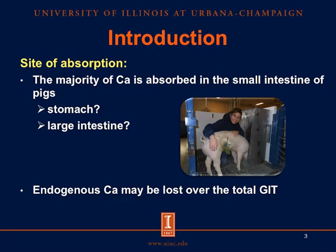It has been reported that most of the calcium is absorbed in the small intestine of the pigs. However, there is not clear data about whether calcium is absorbed in the stomach or in the large intestine as well. It is important to know where calcium is absorbed in order to know what type of collection we should use for calcium digestibility studies, so we can know if we can use duodenal, ileal, or total tract collections. Also, there is not available data about the amount of endogenous calcium that is lost in the different parts of the gastrointestinal tract.